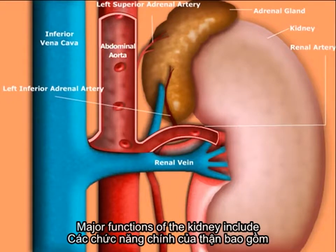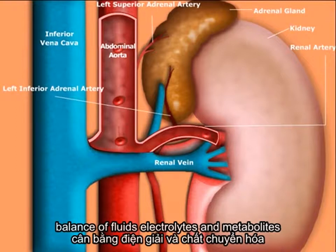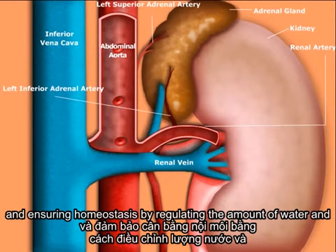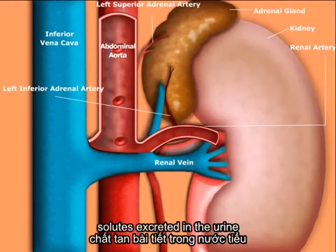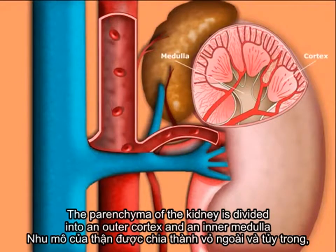Major functions of the kidney include removal of waste products from the circulation, balance of fluids, electrolytes, and metabolites, and ensuring homeostasis by regulating the amount of water and solutes excreted in the urine. The parenchyma of the kidney is divided into an outer cortex and an inner medulla.